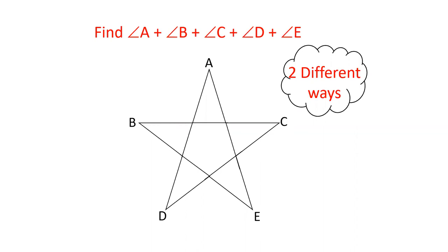Friends, we have two different methods. Let's start with the five angles. Let's start with the first method. Friends, the first method is the exterior angle properties.